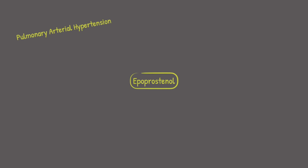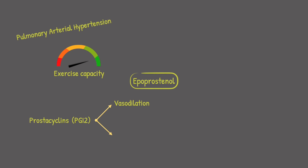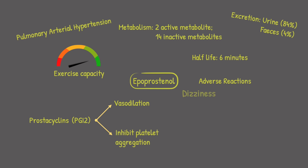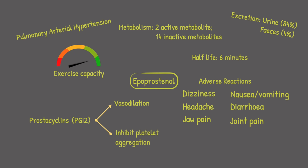Let's summarize: Epoprostenol is used to treat pulmonary arterial hypertension to improve exercise capacity. It is a synthetic prostacyclin that serves as a vasodilator and also inhibits platelet aggregation. Pharmacokinetically, it converts into two active metabolites with minimal activity and 14 inactive metabolites, with a half-life of about six minutes. Approximately 84% is excreted as urine and 4% as feces. Highly reported adverse effects are dizziness, headache, jaw pain, nausea, vomiting, diarrhea, and joint pain.